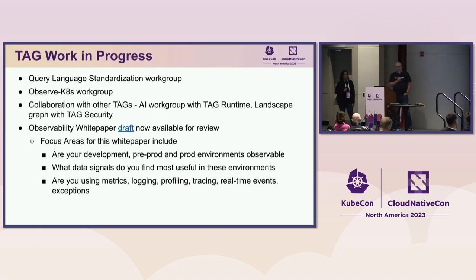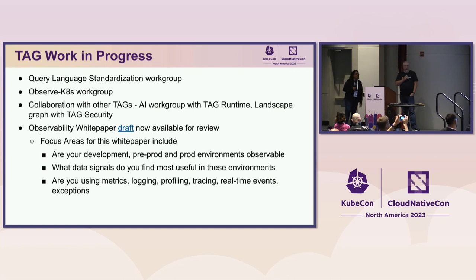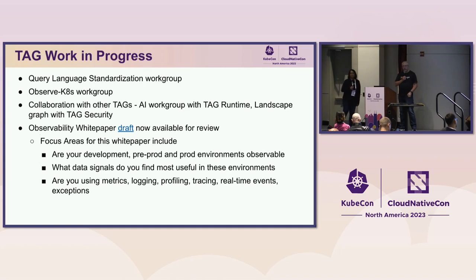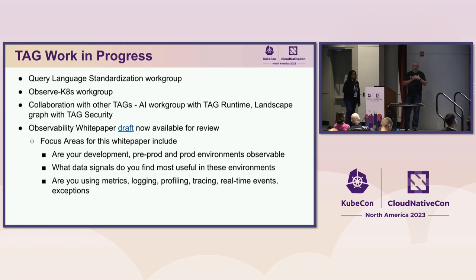Some of the things we have in progress right now: we have the query language standardization group, which Chris runs. There's the Observe K8s working group, which I'm part of. We also have collaborations with other CNCF TAGs — we've been working with TAG Runtime for founding the AI working group, which has a new Slack channel for discussion, and on the Landscape Graph with TAG Security. The TAG is always looking to collaborate with other TAGs to ensure that when there's cross-cutting concern, we're all on the same page.